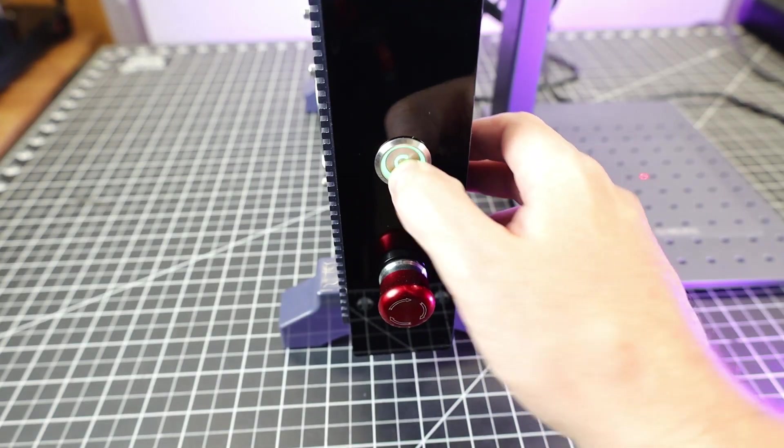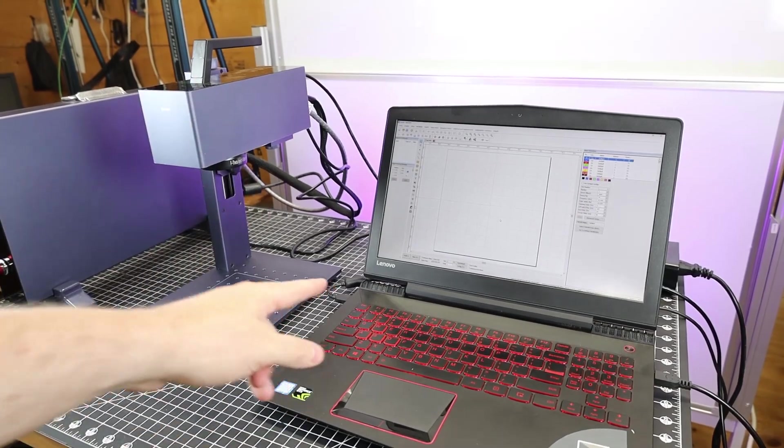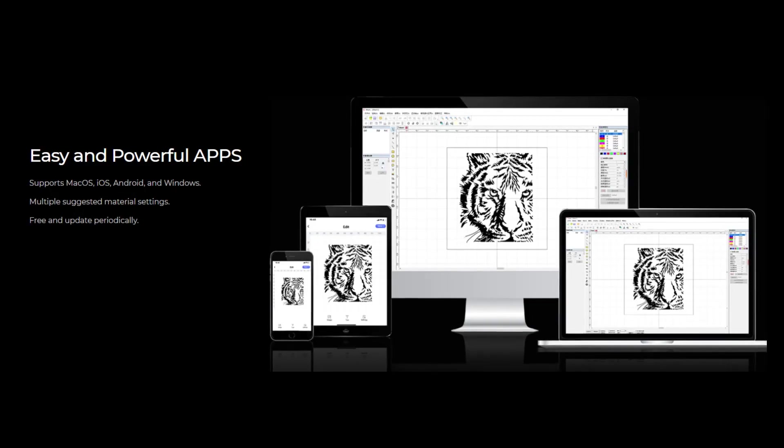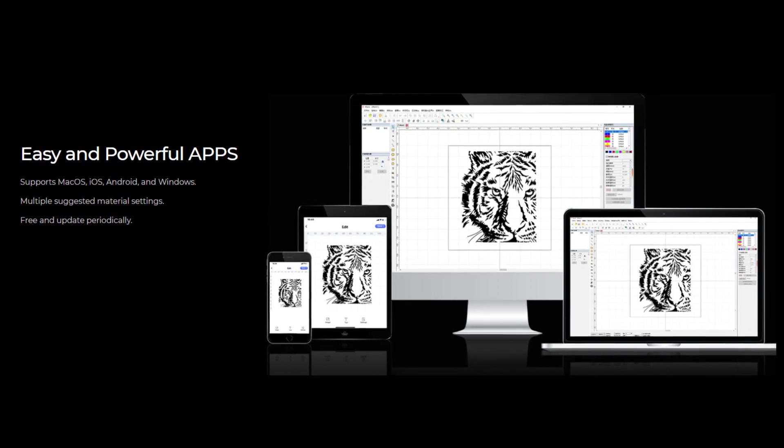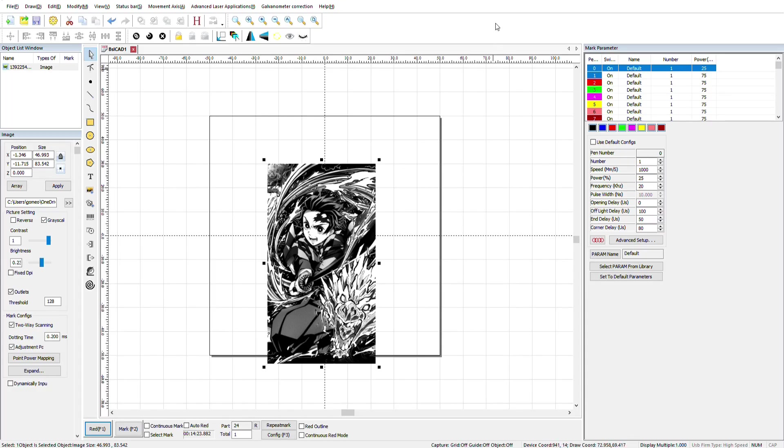And with that all done, I'll power on a laser source, and we can actually start using the machine. And to actually run the machine, you're going to have to use a computer, along with their own G-Laser software. And don't worry, they also have apps for this, so if you don't have a computer, you can use a tablet or phone. And you're not limited to text and shapes like I've been showing. You can do full-on pictures.